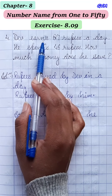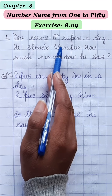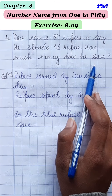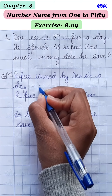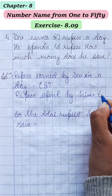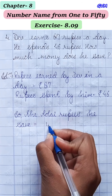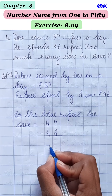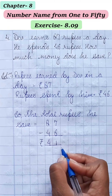Fourth word problem: Dev earns 87 rupees a day. He spends 46 rupees. How much money does he save? Solution: rupees earned by Dev in a day = 87, rupees spent by him = 46। Total rupees he saves = 87 minus 46। 7 minus 6 = 1, 8 minus 4 = 4। तो वो 41 rupees save करता है।